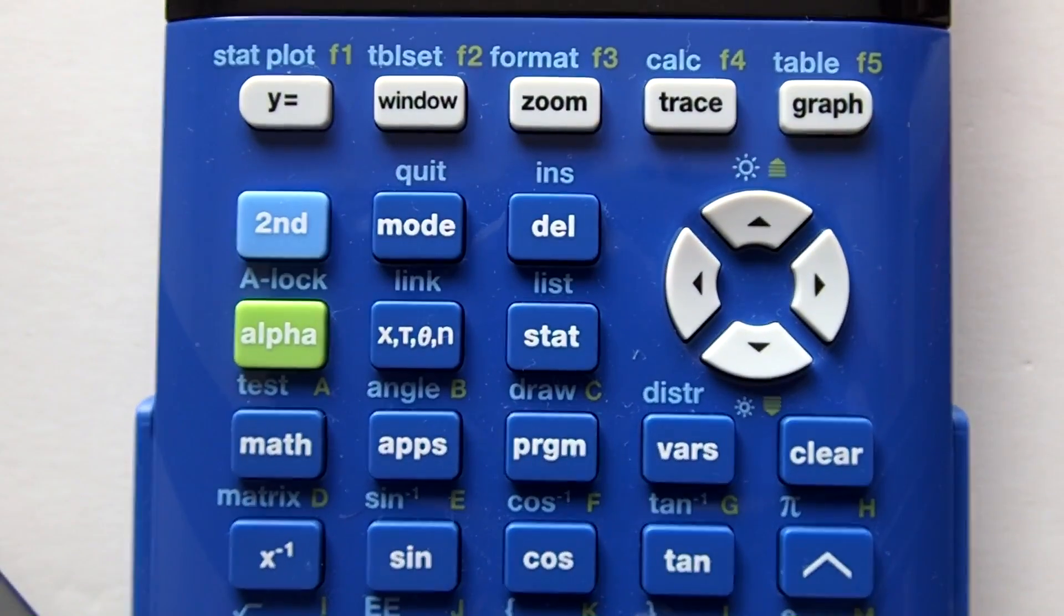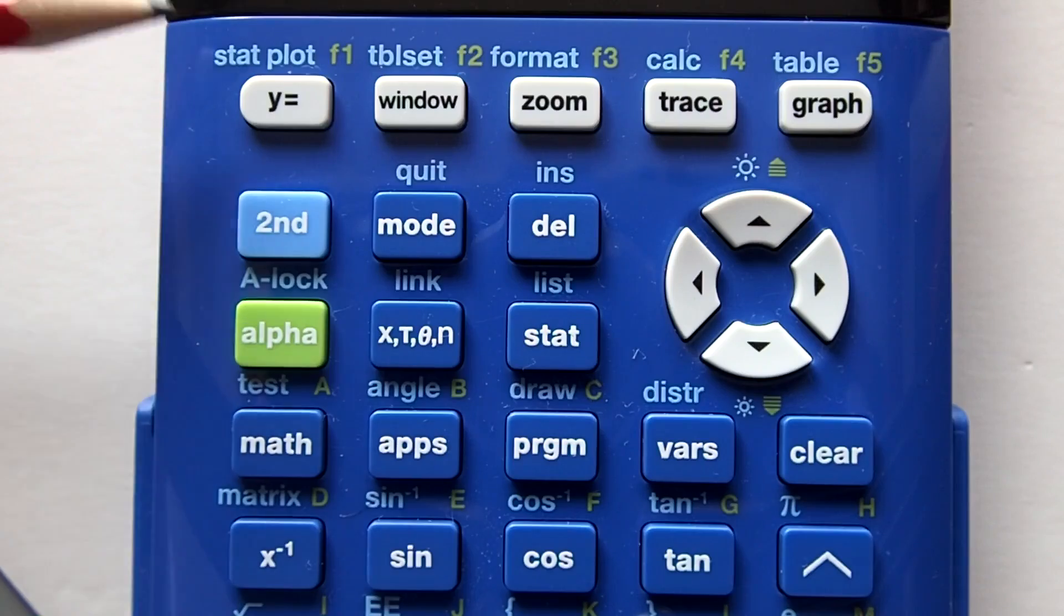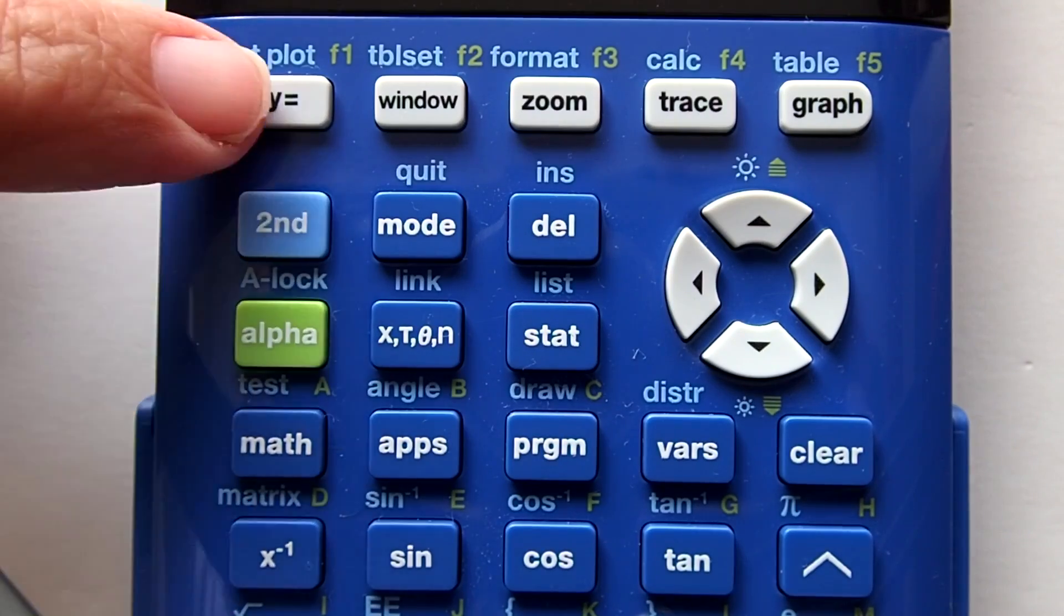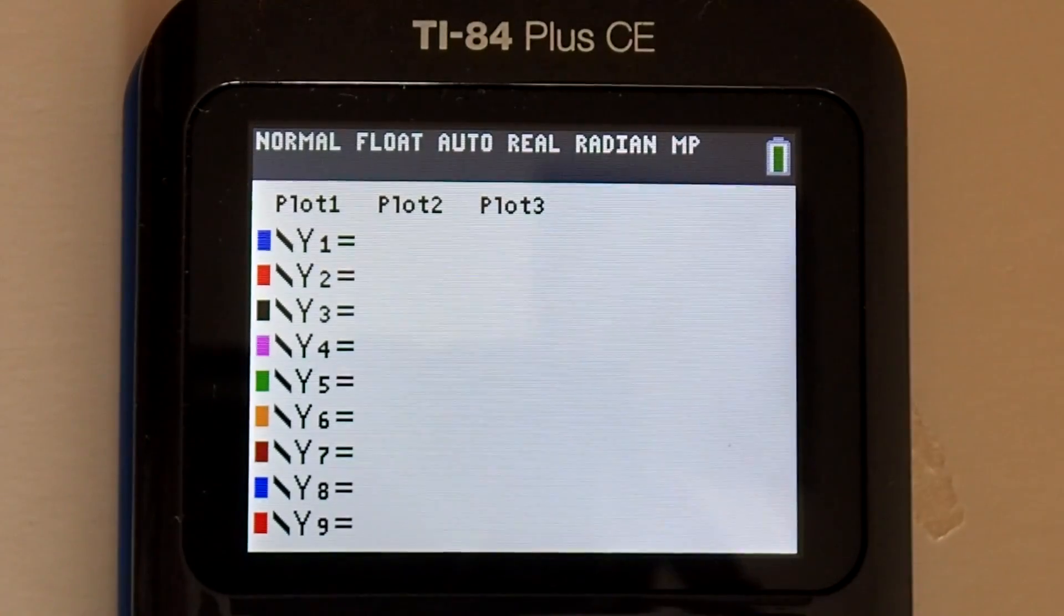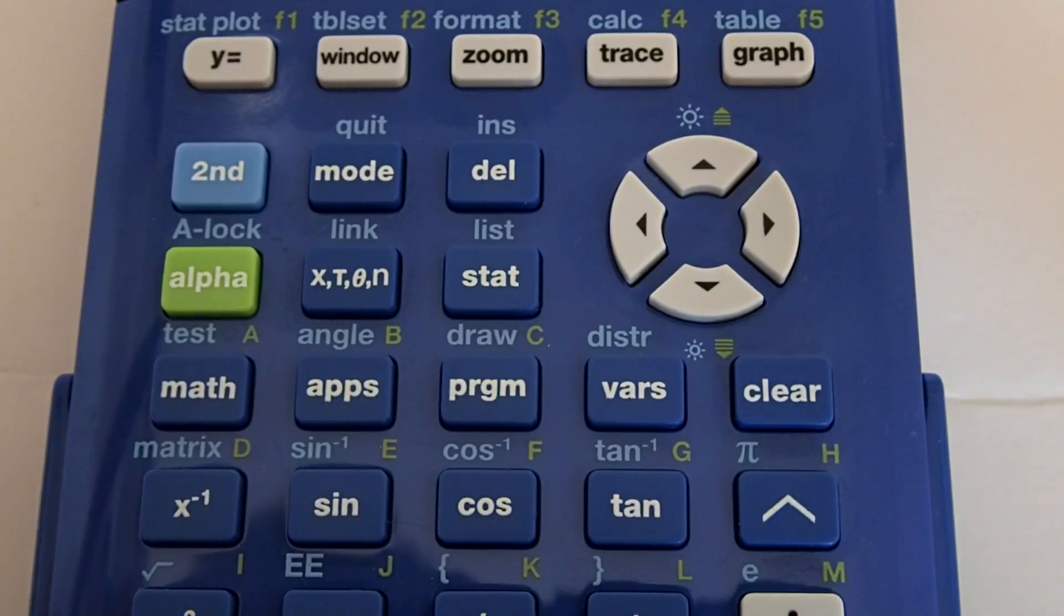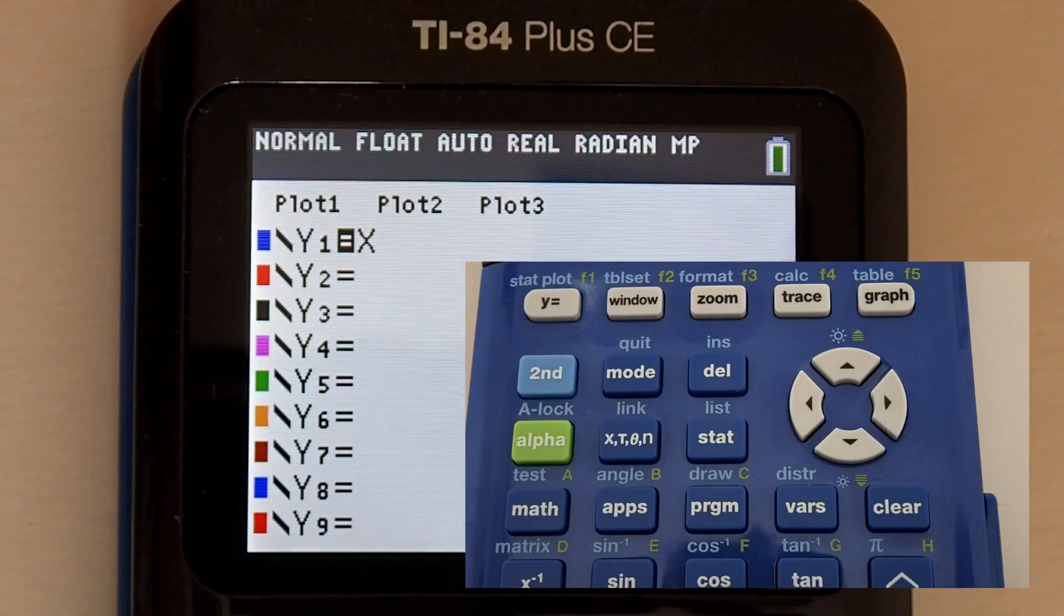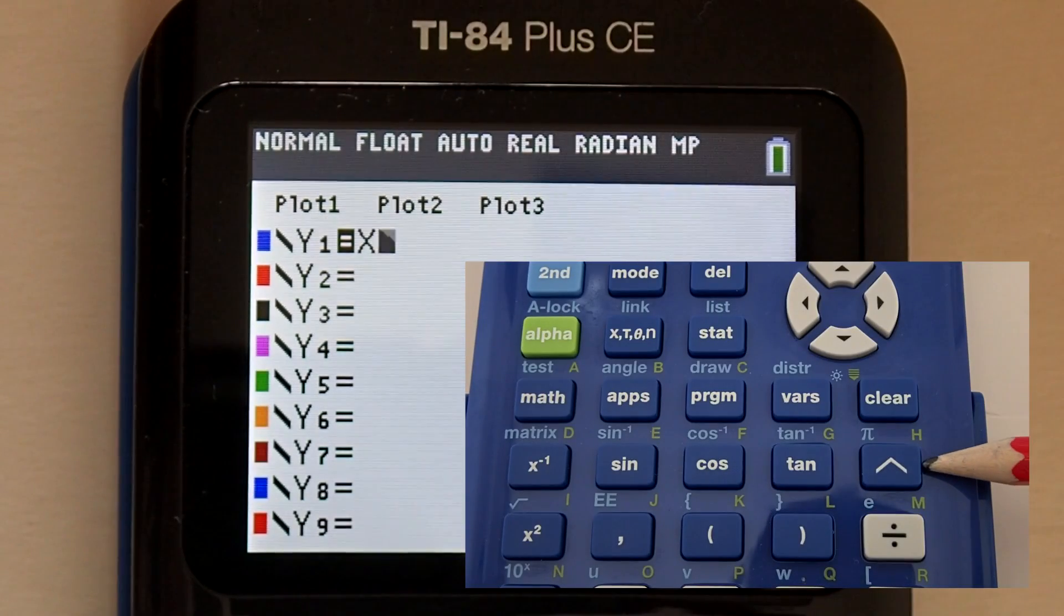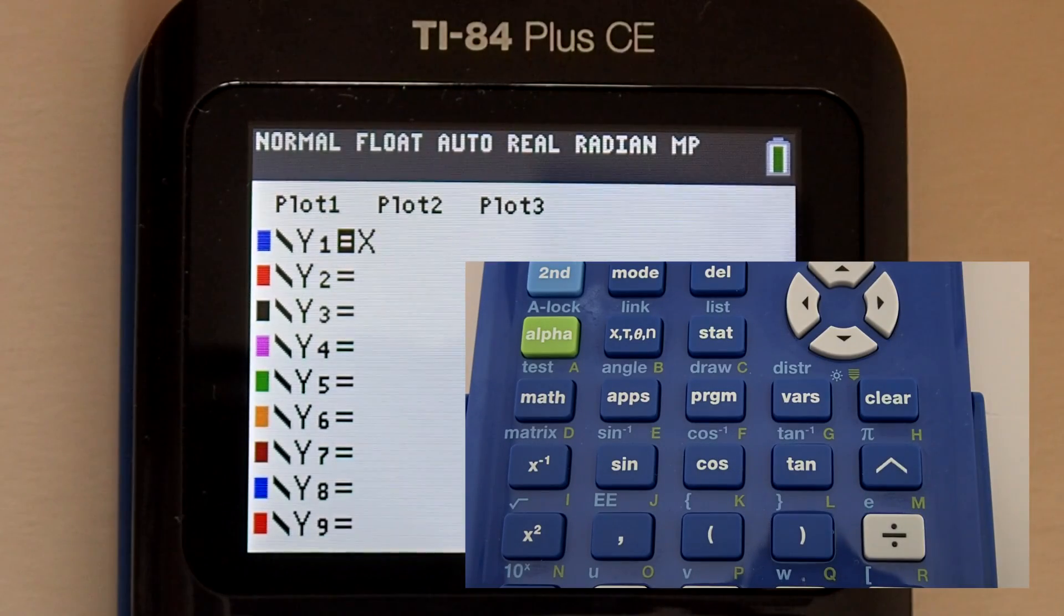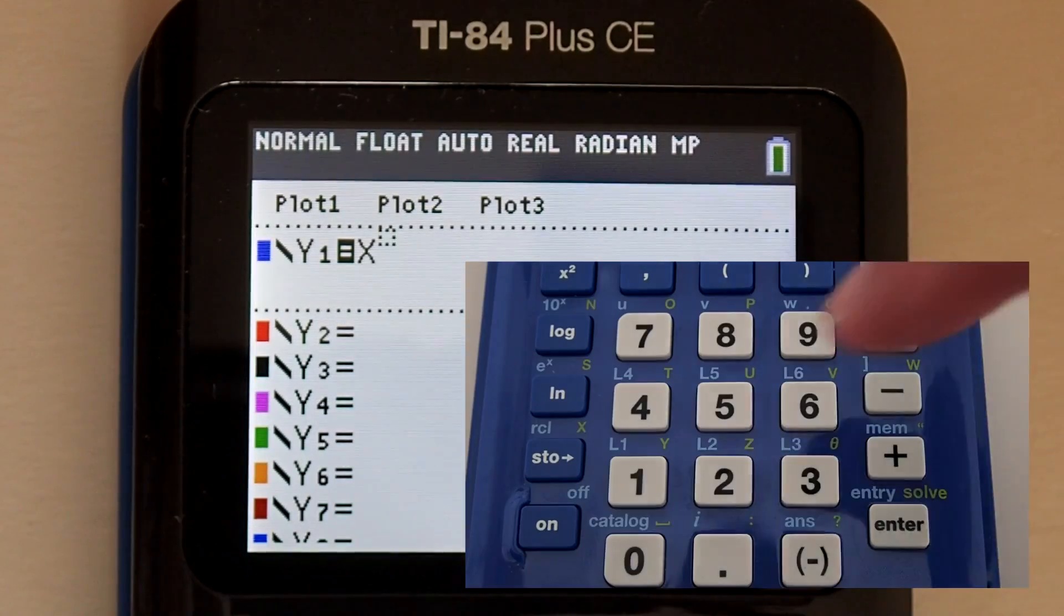Let's get started. Press the y equals key on the top left of the calculator, here. Enter x, located on this key. Then press this exponent key. It moves the cursor to the exponent position. Enter 2.